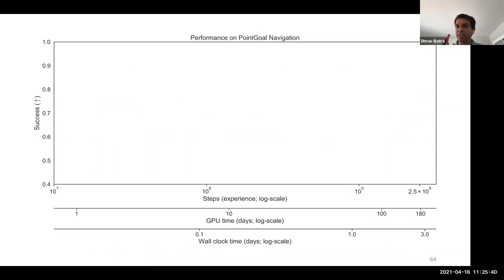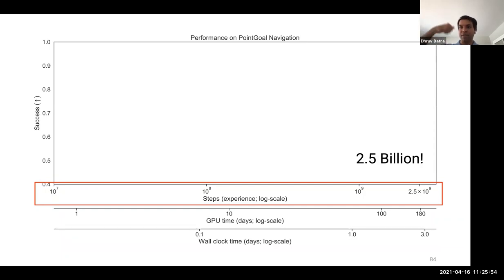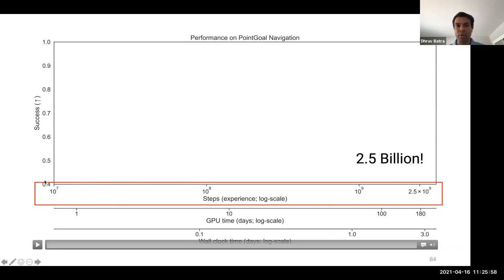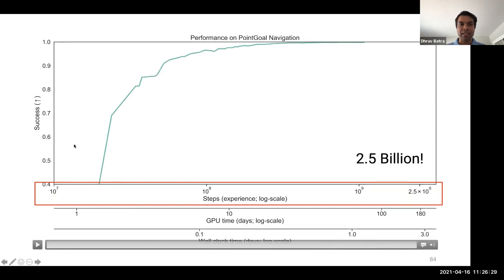And this is our key quantitative result. On the x-axis, I want you to notice amounts of steps of experience. So every time the agent takes an action, it gets a frame and a reward at that action. And so this is in log scale, it's going 10 to the seven, 10 to the eight, 10 to the nine. We are scaling it out to 2.5 billion steps of experience. If you converted, if you looked at the velocity of this robot and converted this into a real experiment on a robot, this would take roughly 80 years for this robot to just be running and gathering this much data.